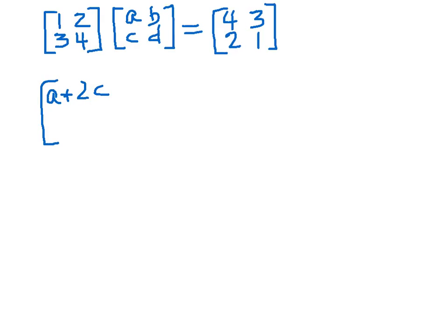And doing this row times the second column will give me B plus 2D. And coming to this row times the first column, 3A plus 4C.